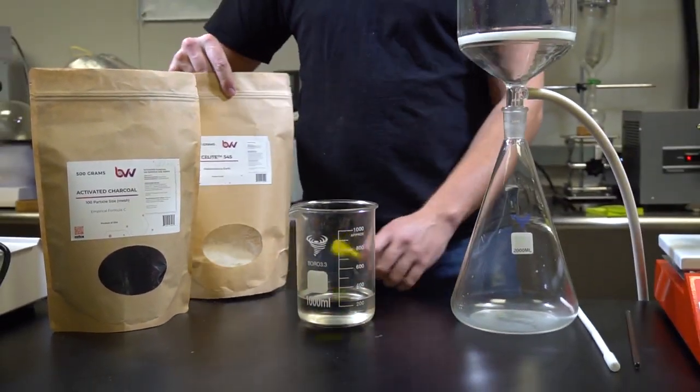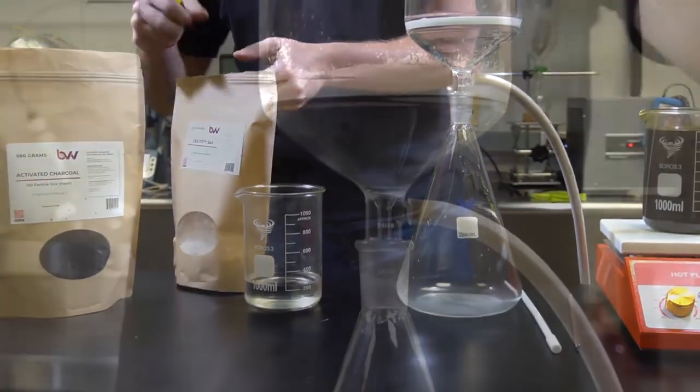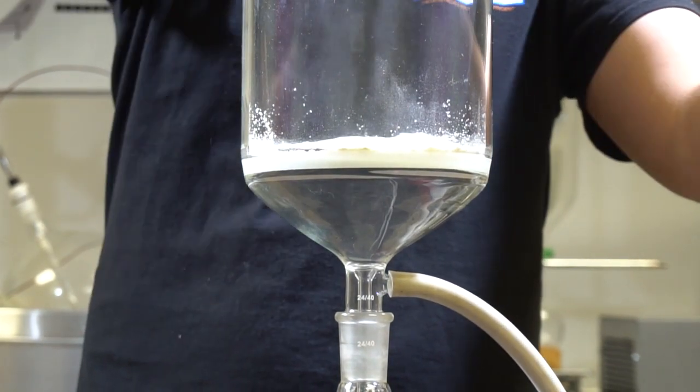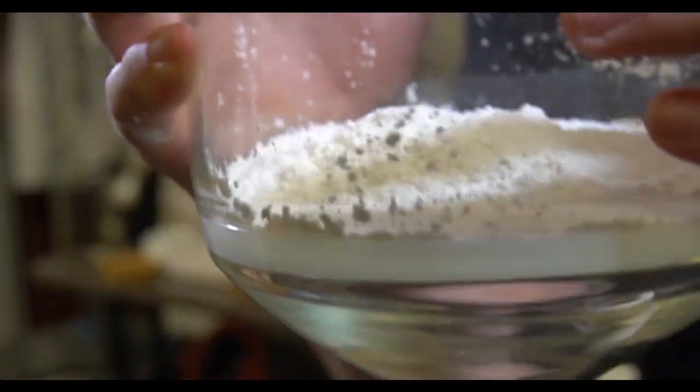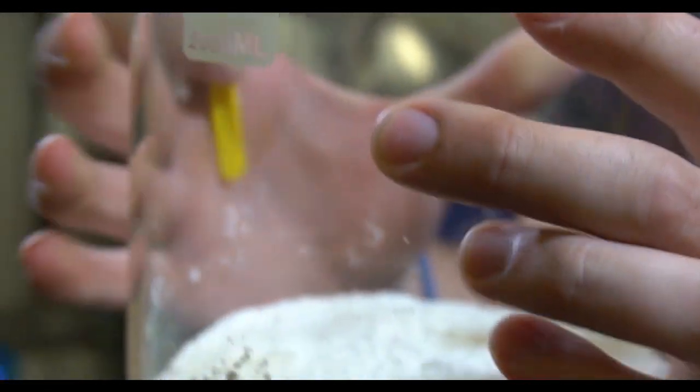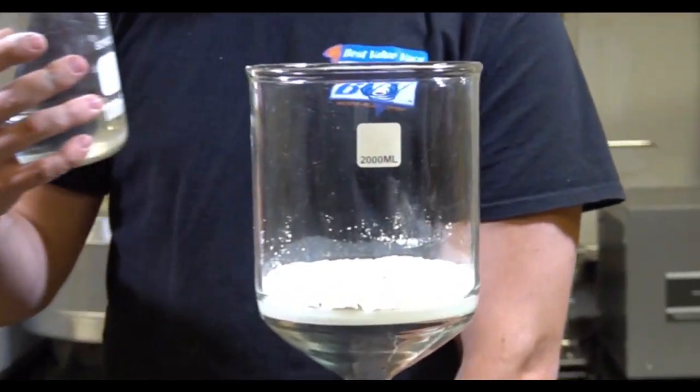So we're going to start off by just making a nice quarter inch patty of Sealight 545. Now we're going to turn on my vacuum pump and I'm going to use ethanol to flatten out my mixture in here.